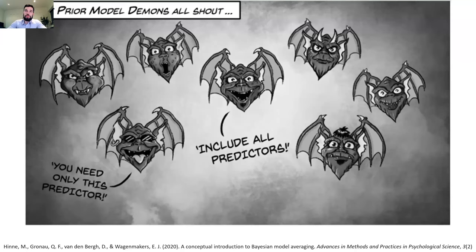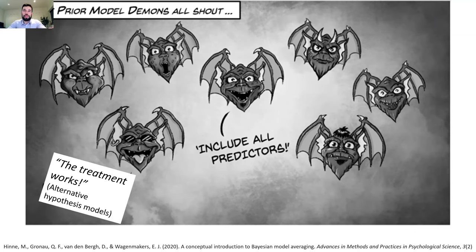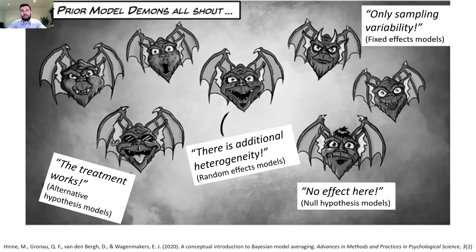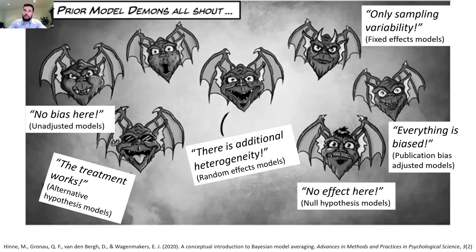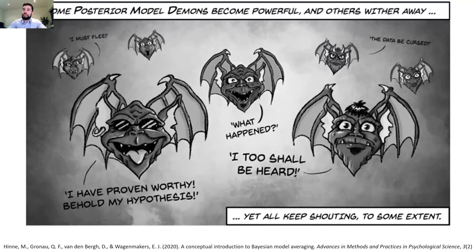In overview, Bayesian model averaging works like this: you have different hypotheses about the data, represented by different models, and each model specifies a hypothesis. For example, one model says the treatment works — the alternative hypothesis is true — or there is no effect — the null hypothesis is true. You can have different assumptions about heterogeneity, such as fixed and random effect models, or different assumptions about the presence or absence of publication bias. You specify all of those different hypotheses through the different models in your ensemble. You feed the models with the data, and the models that predict the data best will grow and their voice will be heard much more — you will base inference much more strongly on them.